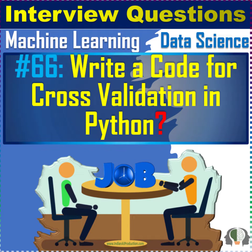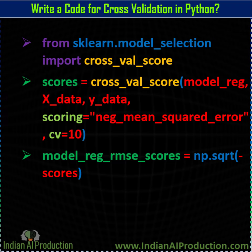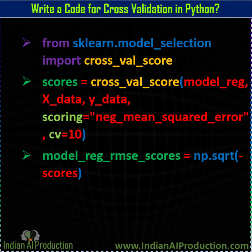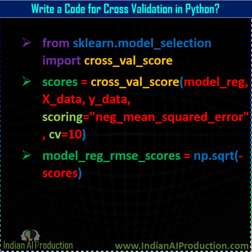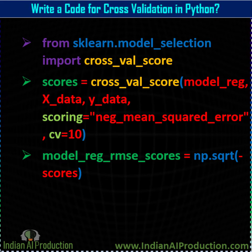1-minute machine learning and data science interview question, question number 66: write code for cross-validation in Python. For that, from sklearn.model_selection we will import the cross_val_score class. Using that class, we will create one object, and while creating the object we have to pass some parameters.